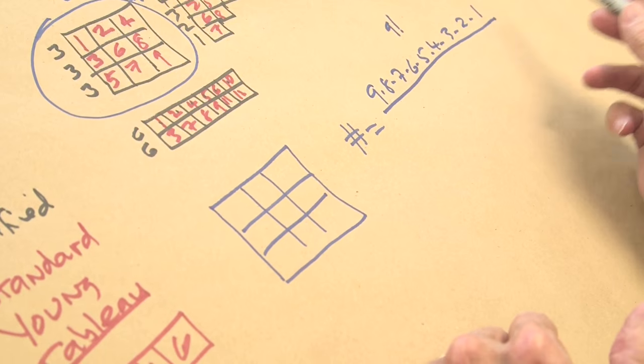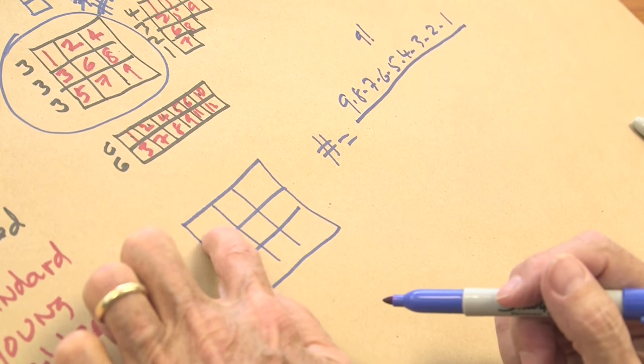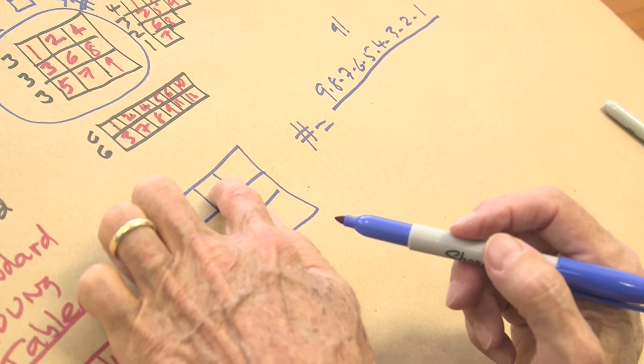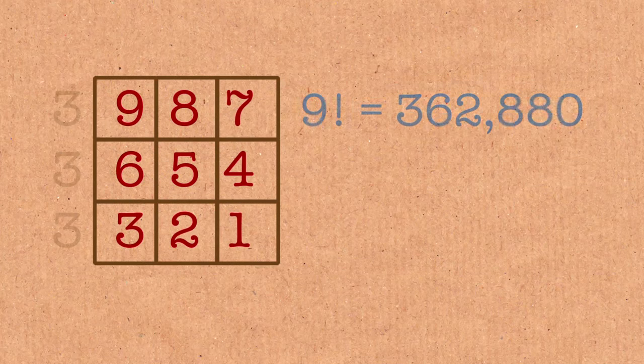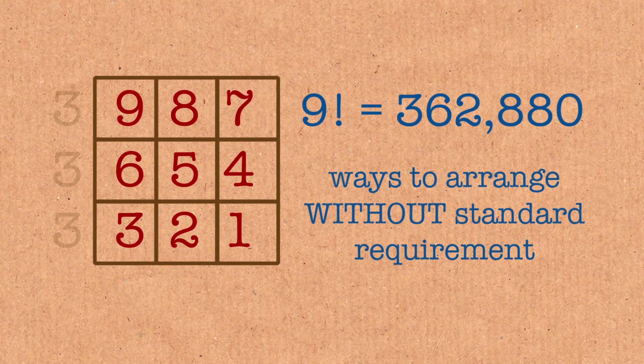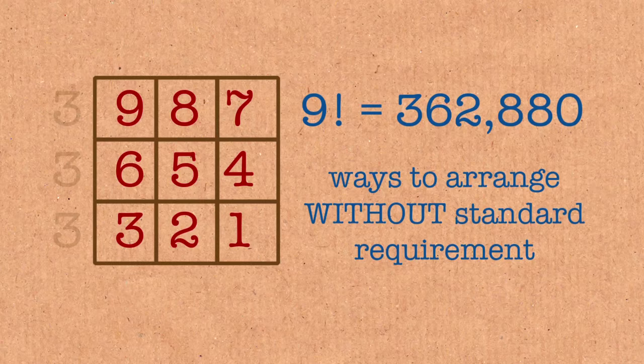Because there's 9 choices for what to put here, and 8 for what to put there once you've decided on the first one, and 7 for what to put here once you've decided on these two, et cetera. So you get 9 factorial quite easily. But if you require the rules to be satisfied, then the number has to be reduced by something, and I'm going to tell you exactly what it has to be reduced by.